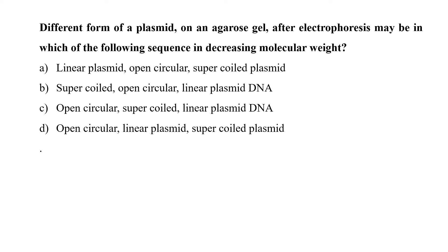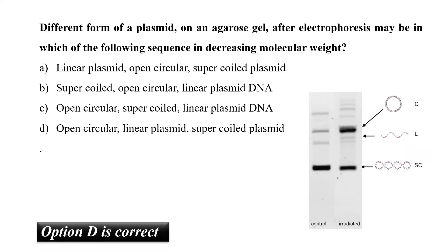Different forms of a plasmid on an agarose gel after electrophoresis may be in which of the following sequence in decreasing molecular weight. First of all, one should know that in electrophoresis, higher molecular weight or open conformation observe retarded migration than the compact or low molecular weight conformations. So plasmid DNA which can exist in three conformations: supercoil which is most compact, open circular, or linear. For the same overall size, supercoil DNA being compact may run faster and then open circular. Linear DNA observes less friction than open circular conformation. Hence, the order will be supercoil DNA will be fastest, linear moderate, and open circular will have the least velocity. So option D would be the correct answer.